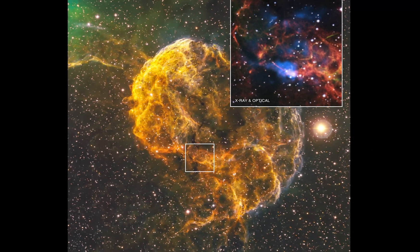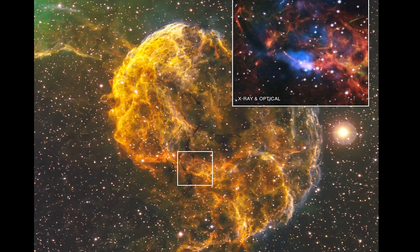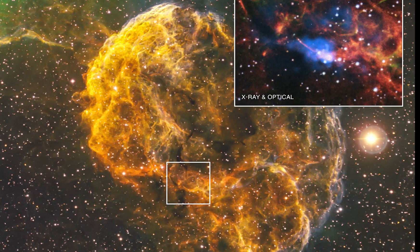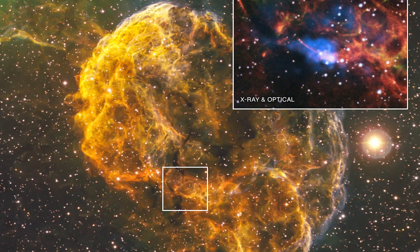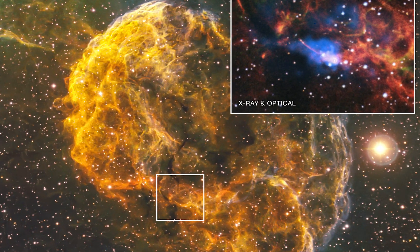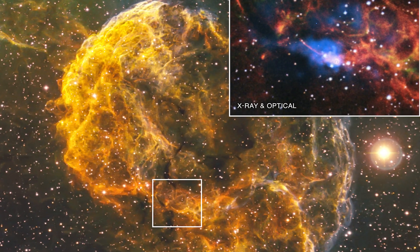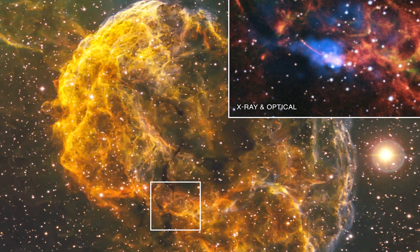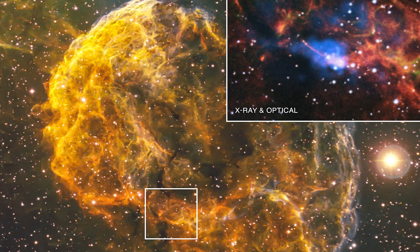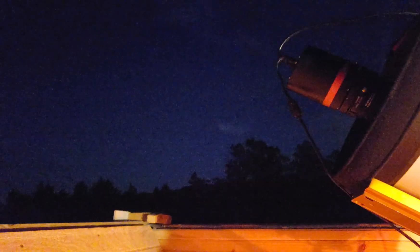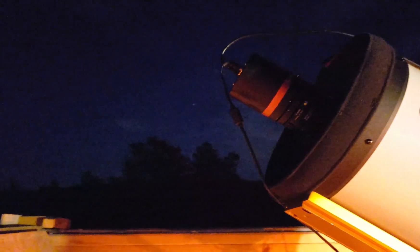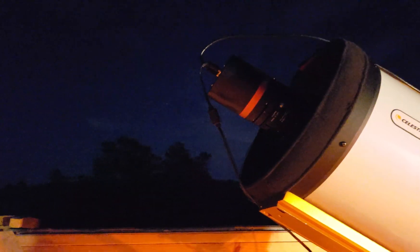NASA says there is a circular structure surrounding the pulsar and a jet-like feature pointing in an upward direction, which is actually causing this mega bubble. There are patches of clouds and it's pretty cold at night.